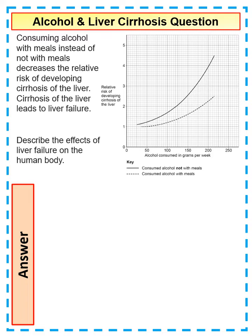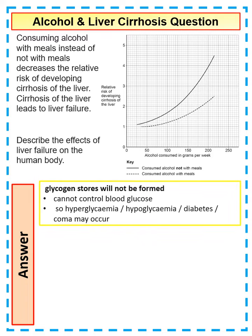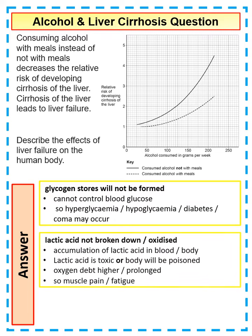There are a number of key things we need to talk about. The first thing — remember that the liver stores glycogen. So if it can't store glycogen, it can't help control blood glucose, which can lead to diabetes or hyperglycemia.